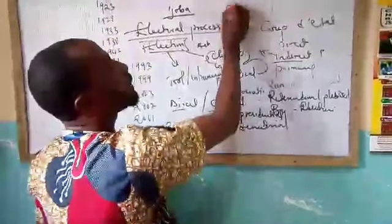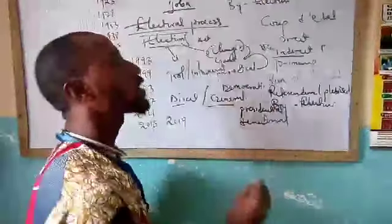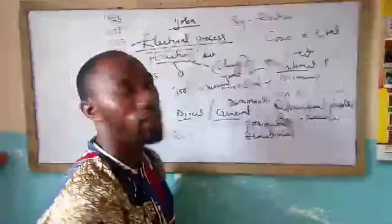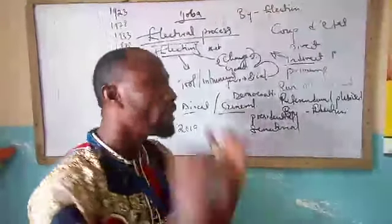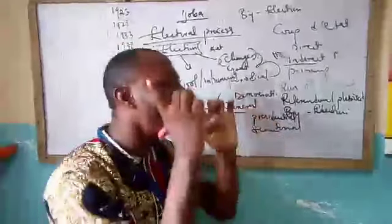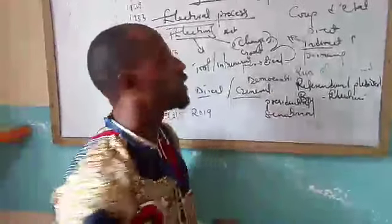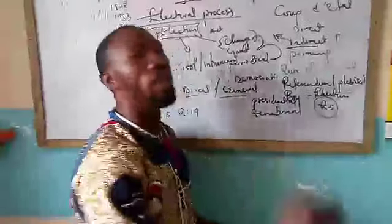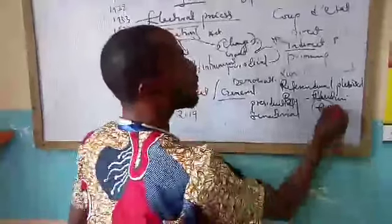What is by-election? By-election is a type of election conducted when a member of parliament resigns or due to death. This tells us that by-election can only take place in the legislative branch of government — we don't have by-election in the executive branch. If a president dies, according to the Nigerian constitution (section 140), no election shall be conducted.